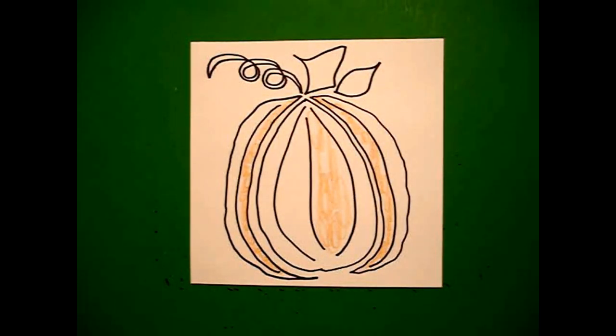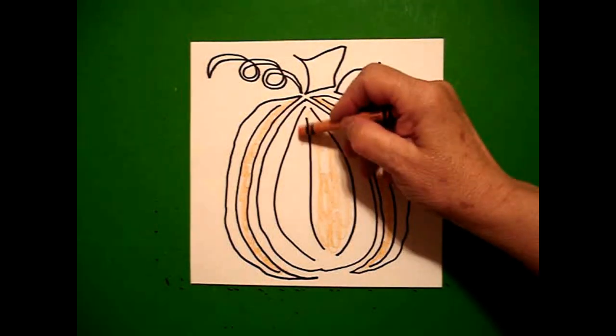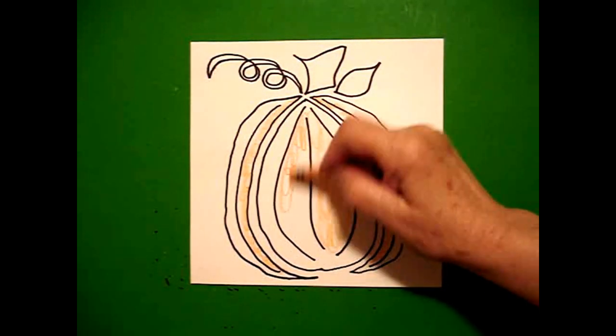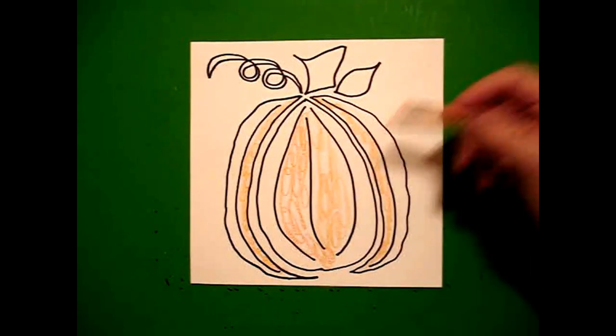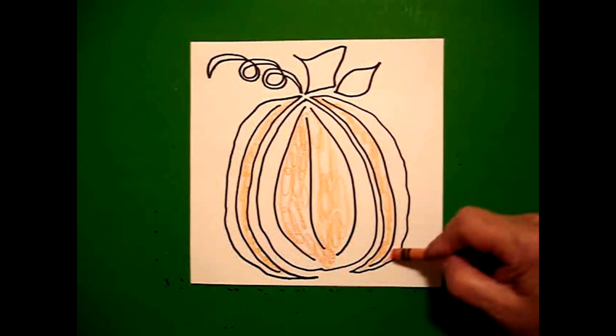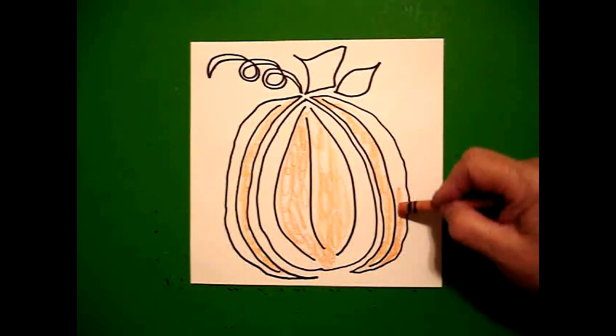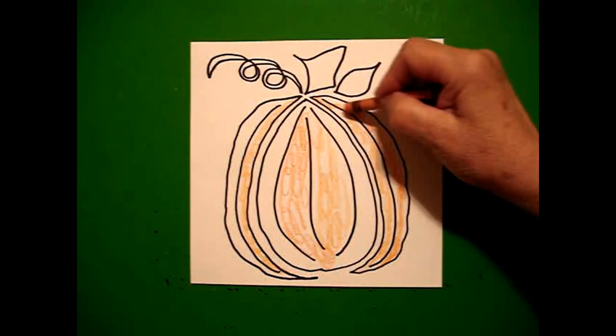Now, I get my regular orange, and I'm going to color the opposite side of the center orange. And then I'm going to come on this side on the right, and color this section orange.